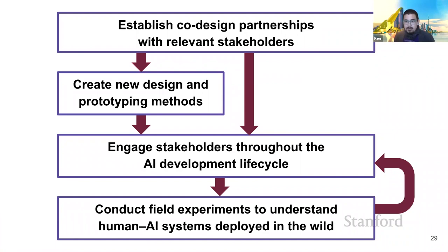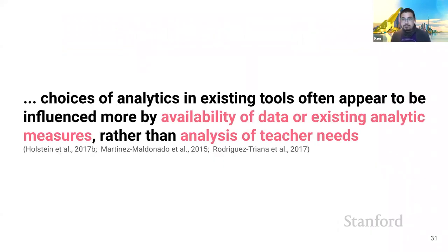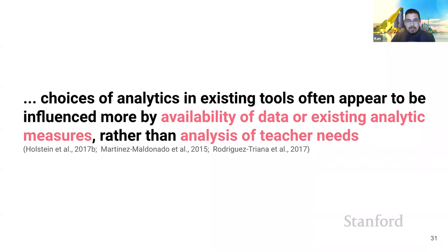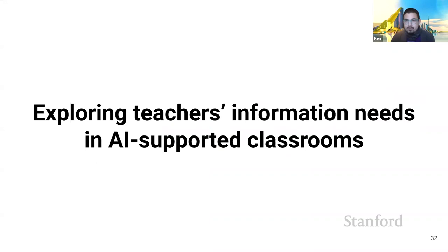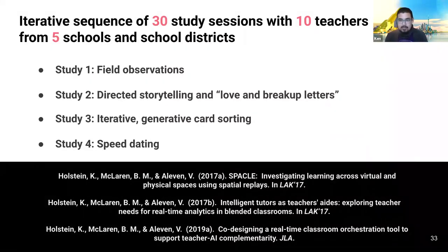I'll give an overview of this work ranging from our earliest design explorations and iterative co-design and prototyping with teachers, through to the classroom evaluation of a new tool called Lumilo — a set of mixed reality smart glasses for teachers, which has been used in over 50 middle school classrooms. We started this research by first getting a sense of the challenges that teachers face in orchestrating these AI-supported classrooms. Various researchers had pointed out that choices of analytics in existing teacher-facing tools appeared to be influenced more by existing technical feasibility than by an analysis of teachers' needs.